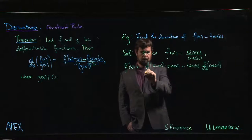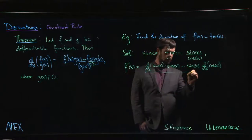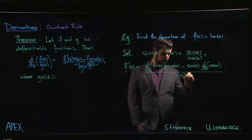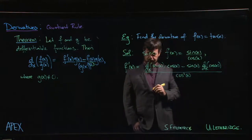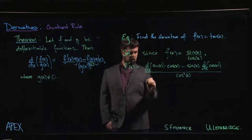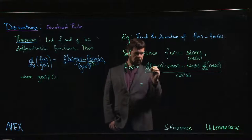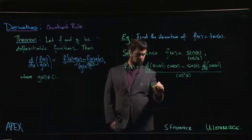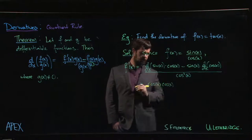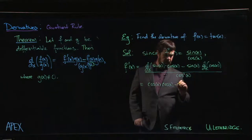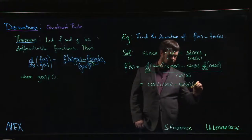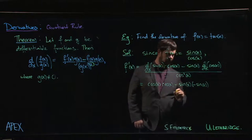So let's carry out those derivatives. The derivative of sine is cosine, so we have cos x times cos x, minus sine x times minus sine x, all divided by cos squared x.